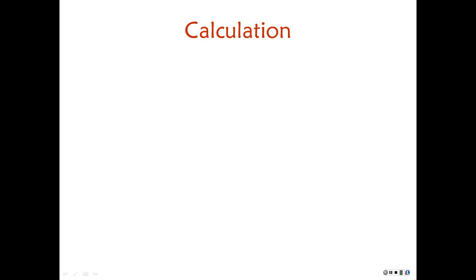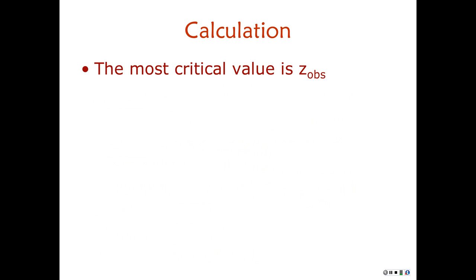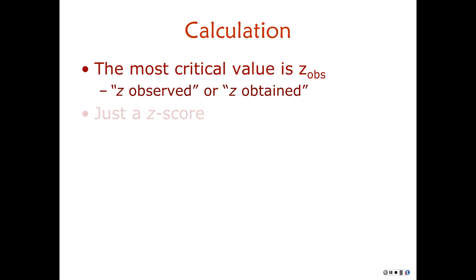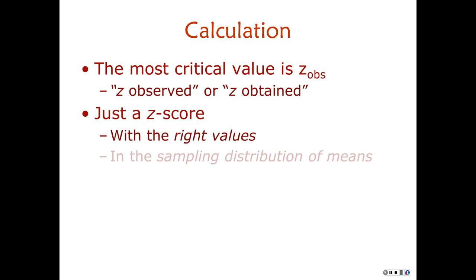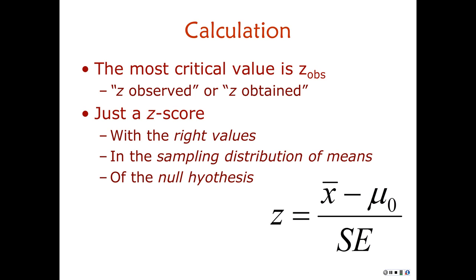The most critical value to find is z-observed, sometimes called z-obtained — the z-score of your sample mean in the sampling distribution of means of the null hypothesis. You take the difference between your sample mean and the null hypothesis mean, and divide by the standard error of the mean. After all that logic, the calculation is quite simple. It's just a z-score.